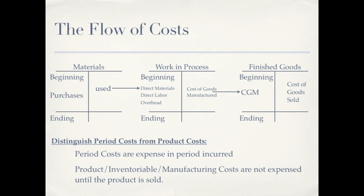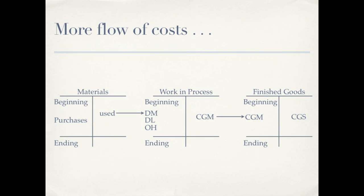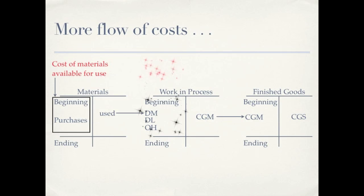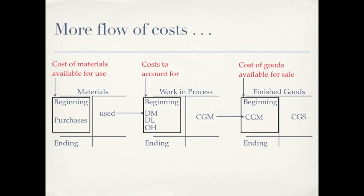Also be aware that you could hear product cost called a couple of other things — you could hear it called inventoriable cost, or manufacturing costs. Beginning materials and purchases of materials combined are called cost of materials available for use. Beginning work in process plus those product costs are called costs to account for. Beginning finished goods and cost of goods manufactured is called cost of goods available for sale. Direct materials plus direct labor plus overhead are called your product costs.